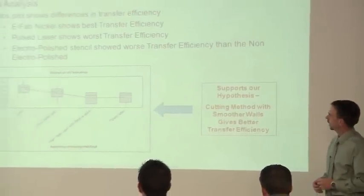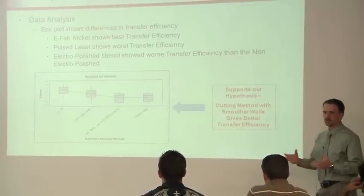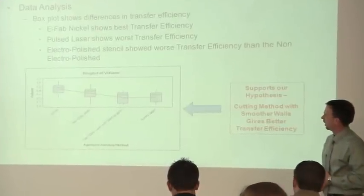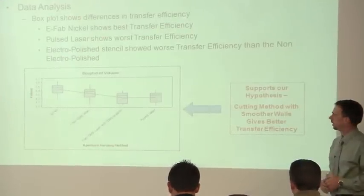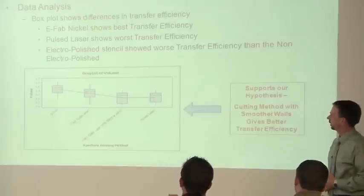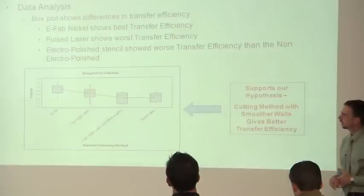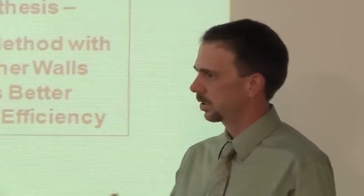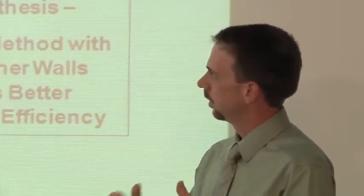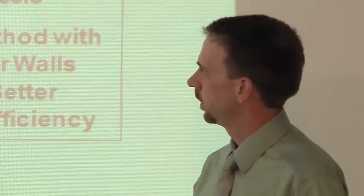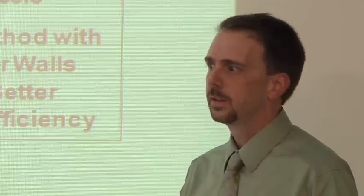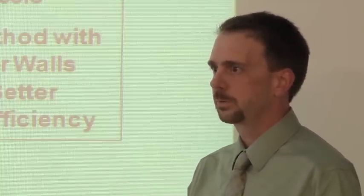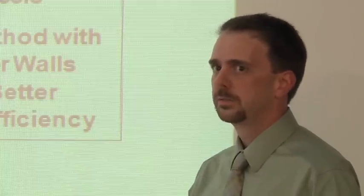We did the same sort of analysis here. We did some box plots to look at the mean and the spread of the data. In this graph here, the EFAB is on the far left, followed by fiber optic laser, then fiber optic laser with electropolish, and the pulse laser is the one on the far right. This is pretty much exactly what we would expect based on our hypothesis. The EFAB had the smoothest wall, gave us the best release. The fiber optic laser was the next smoothest wall surface, a little bit less than the EFAB. And the pulse YAG laser, which was the roughest wall, gave us the least amount of paste released. A little surprising with the electropolish - that's supposed to smooth out the walls a little bit, give you a smoother surface. You would expect that to perform a little bit better than the fiber optic laser. It didn't.